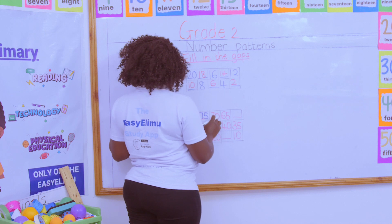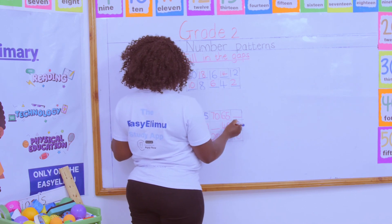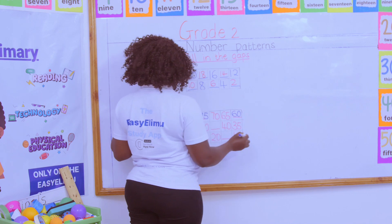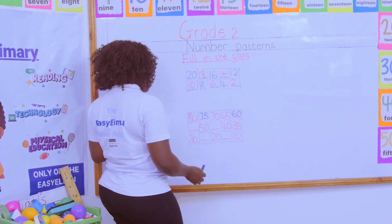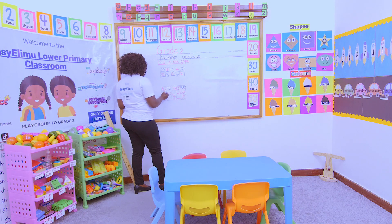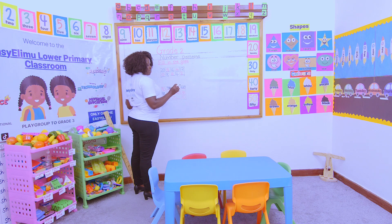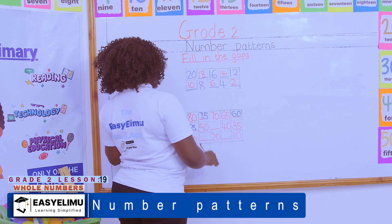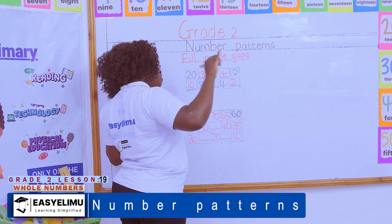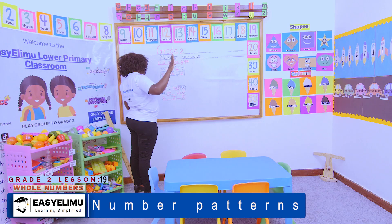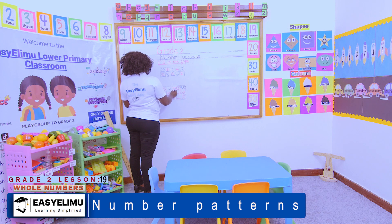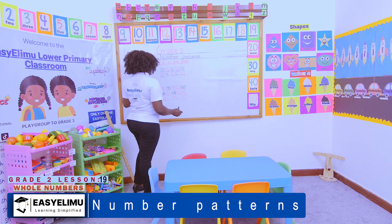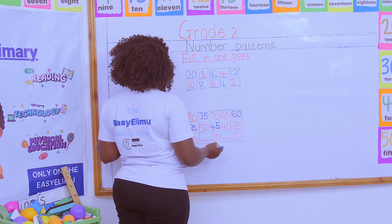Then after that we have 70, then 65, then before 65 we have 60. When we reduce 60 by 5, what do we get? We get 55 — very good. When you reduce 55 by 5, you get 50. Now reducing 50 by 5 gives us 45. So the missing number here is 45.